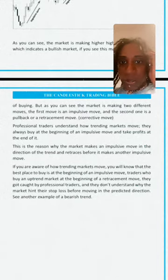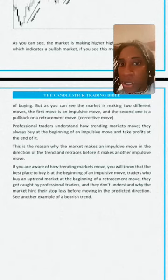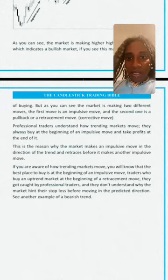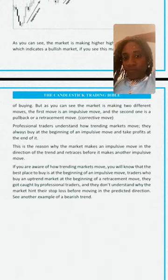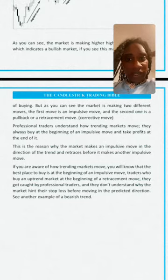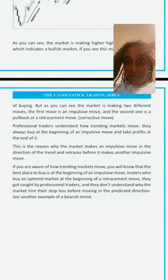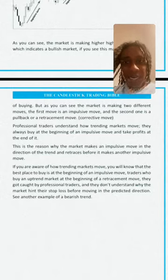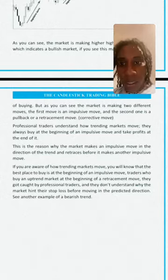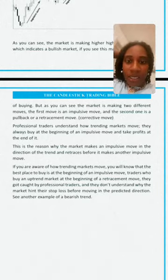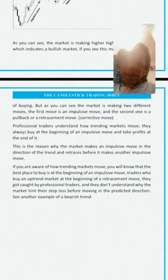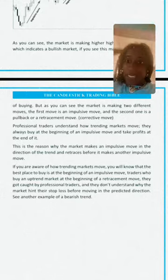If you're swing trading or day trading and holding a position without checking charts constantly, this matters a lot. The market makes the impulsive move in the direction of the trend. If you're aware of how trending markets move, you'll know the best place to buy is at the beginning of an impulse move — wait until it retraces. Traders who buy in an uptrend market at the beginning of a retracement get caught by professional traders and don't understand why the market hits their stop loss before moving in the predicted direction.